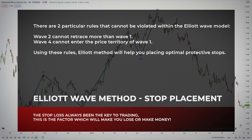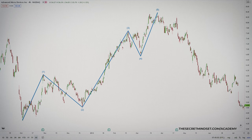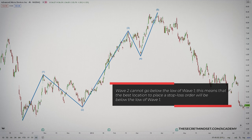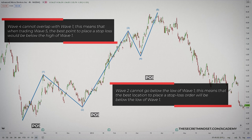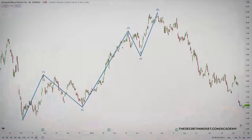The stop loss has always been the key to trading — this is the factor which will make you lose or make money. There are two particular rules that cannot be violated within the Elliott wave model: wave 2 cannot retrace more than wave 1, and wave 4 cannot enter the price territory of wave 1. Using these rules, the Elliott method will help you place optimal protective stops. For instance, when trading the third wave, you will know that wave 2 cannot go below the low of wave 1, so the best location to place a stop loss order will be below the low of wave 1. Wave 4 cannot overlap with wave 1, meaning that when trading wave 5, the best point to place a stop loss would be below the high of wave 1. The process is simple: identify a possible Elliott cycle, check the rules to confirm all conditions are met, enter during an impulsive wave, and place your protective stops accordingly. You can eliminate much of the confusion by applying these rules, and you'll also minimize your losses to a known amount.